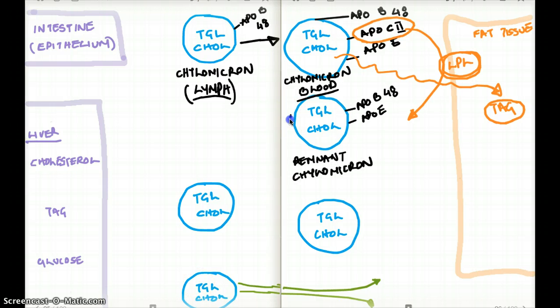Now this remnant chylomicron is going to make its way to the liver. And the entire chylomicron is going to be metabolized in the liver. And how would liver know that this is something I am ready to accept? Liver recognizes ApoE. ApoE is a marker for liver to say that this can enter the liver for metabolism.